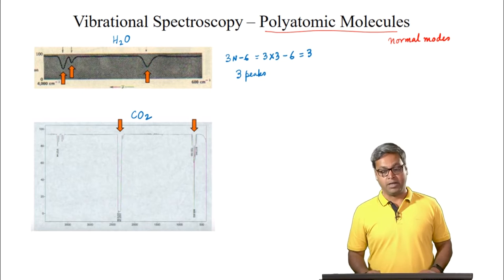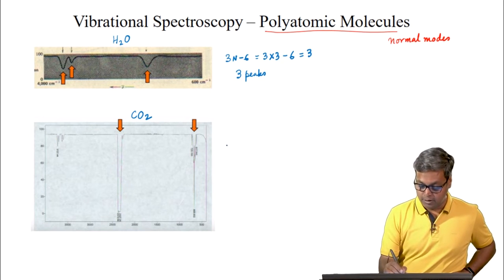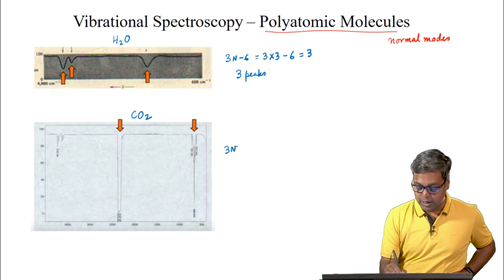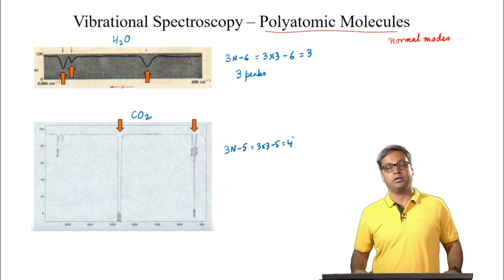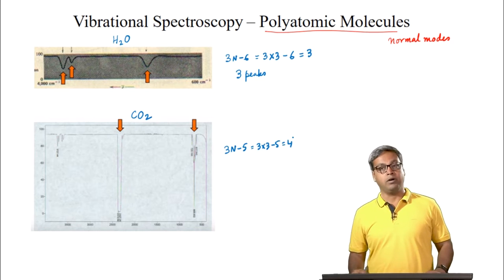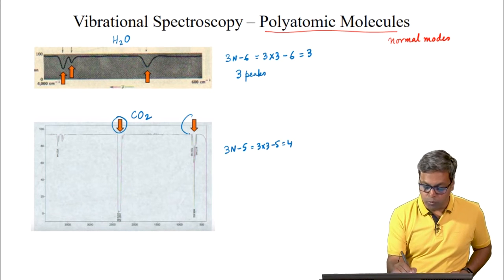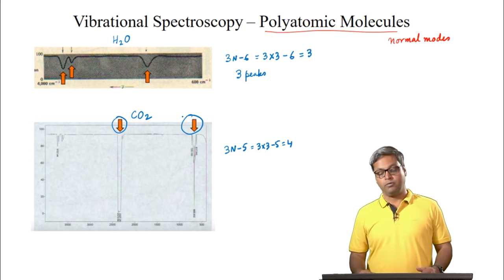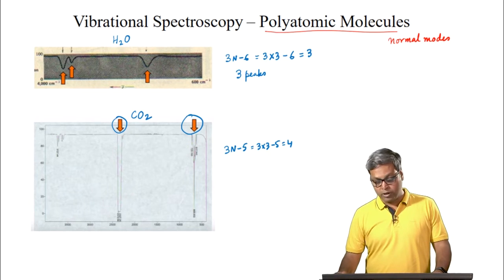For carbon dioxide, because carbon dioxide is linear, there are 3n-5, that means 3×3-5 = 4 vibrations. However, only 2 peaks are observed in the IR spectrum.